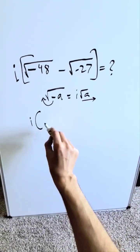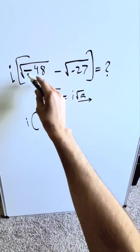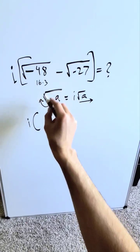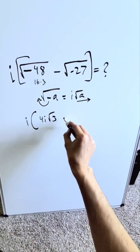Now look right here, we have an i sitting outside. 48 is 16 times 3. The minus is coming out as an i, square root of 16 is 4. I have 4i and root 3.